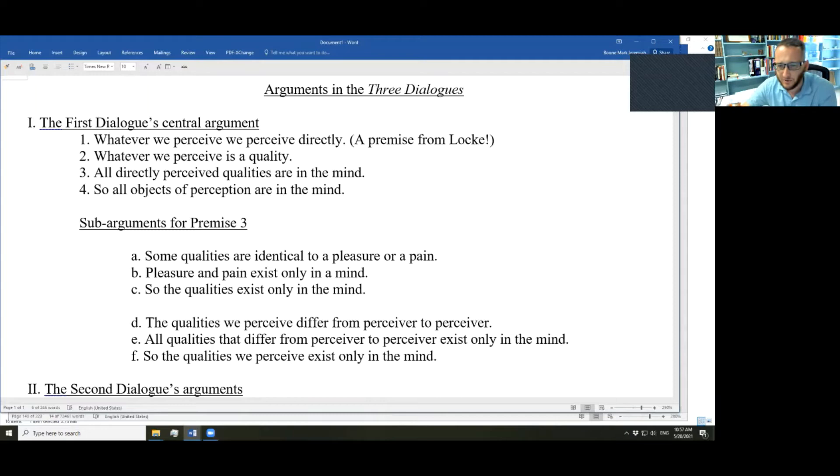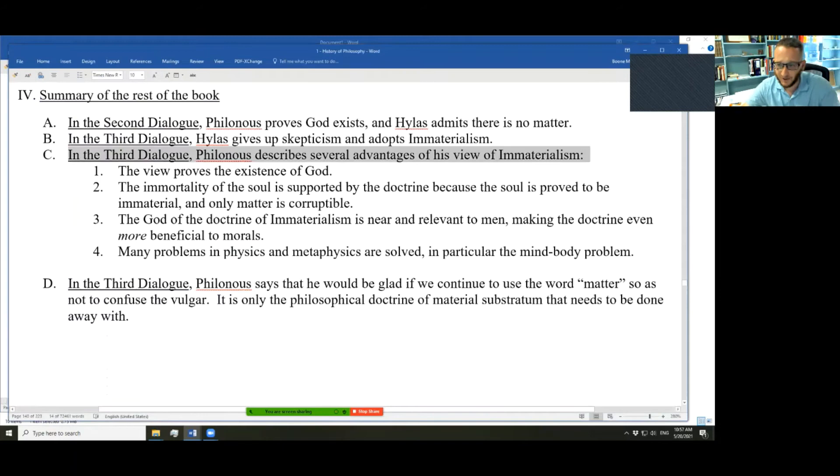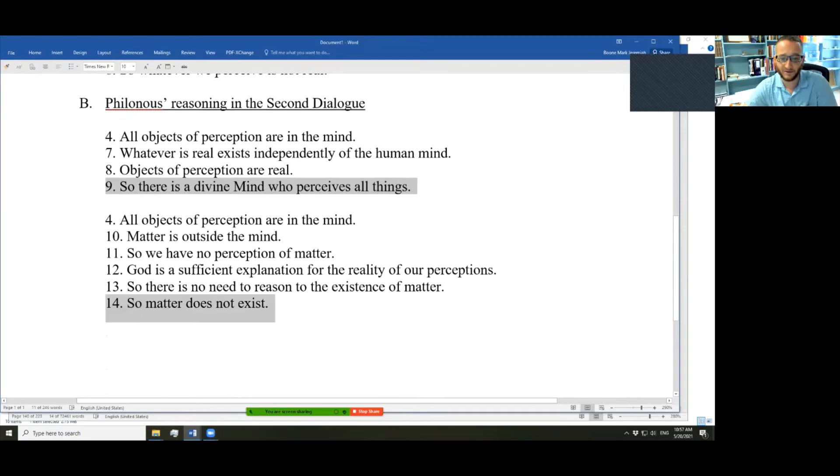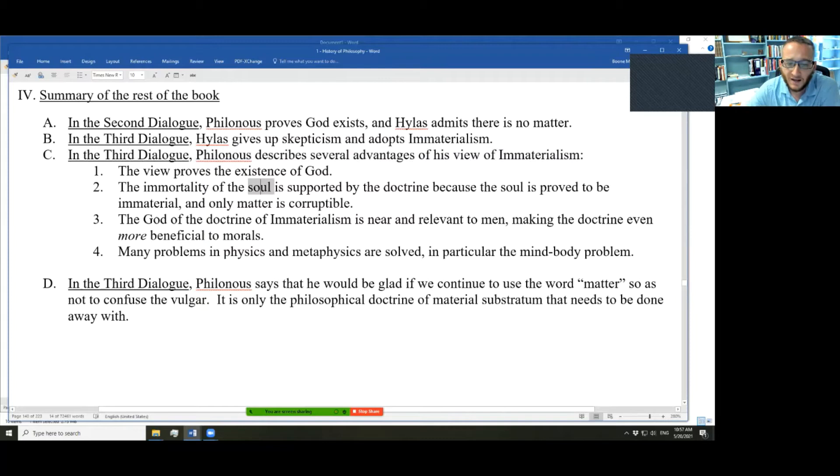Okay. So, what else happens in the text after these arguments? Well, Philonous describes the advantages of his views. He's shown that God exists and that matter does not. Advantages of this? Well, we prove the existence of God. The doctrine that there is life after death, that the soul continues to exist independently of the body, that the soul is itself immortal. This healthy doctrine is supported by immaterialism because the soul is proved to be immaterial. And only matter is corruptible,